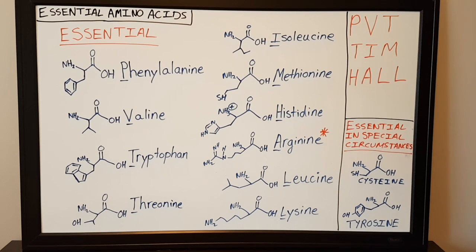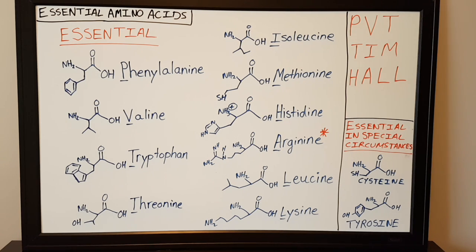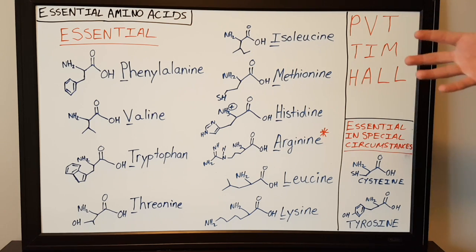Hey guys, in this video I'll be talking about essential amino acids. Just to give you a brief definition: an essential amino acid is an amino acid that cannot be produced or synthesized de novo in an organism. Thus, the only way to get these amino acids is through dietary intake.